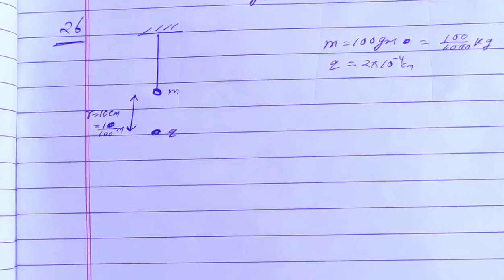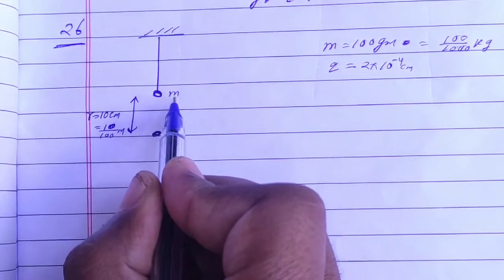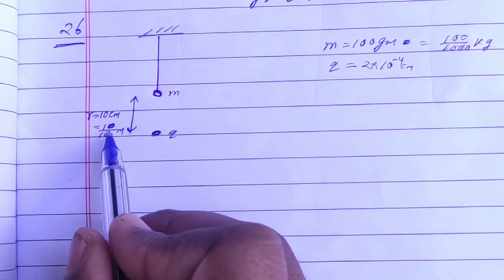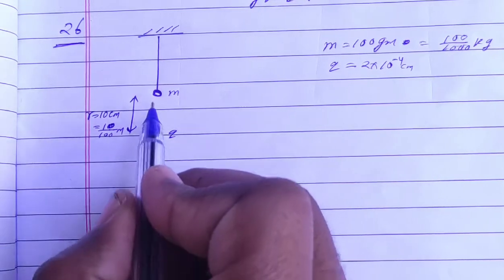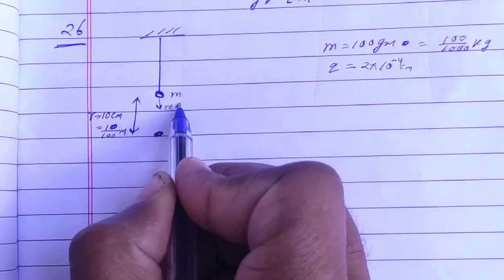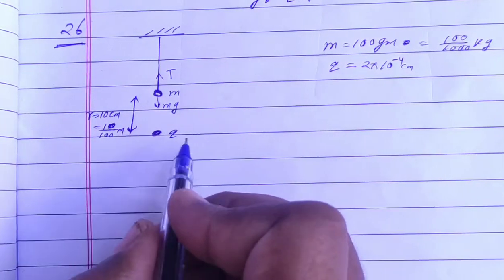Here we have the string with the mass m and charge q at a distance of 10 centimeters, which is 0.1 meters. Now this mass experiences an mg force downward, and this mg force causes tension T to develop in the string.